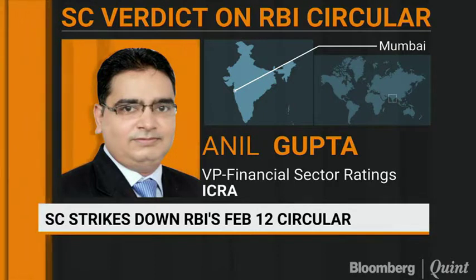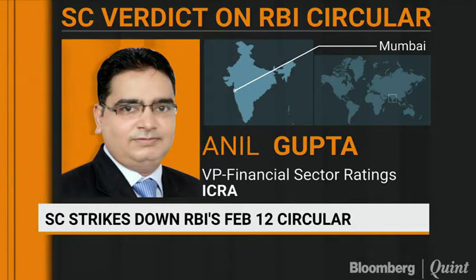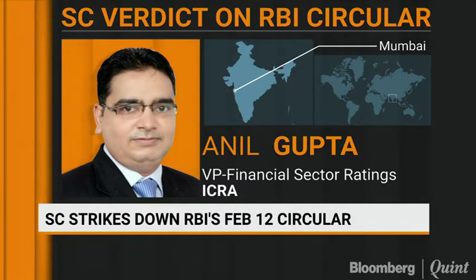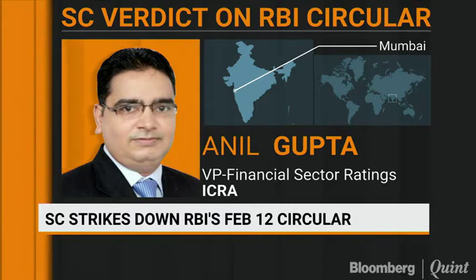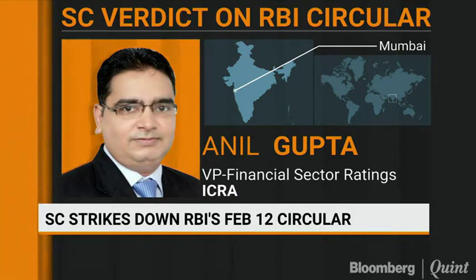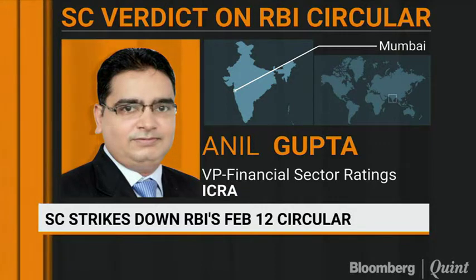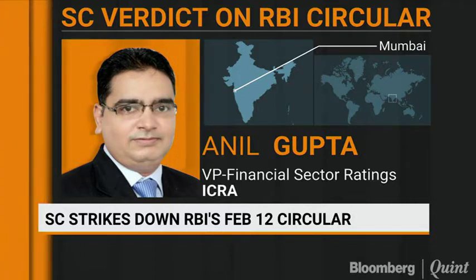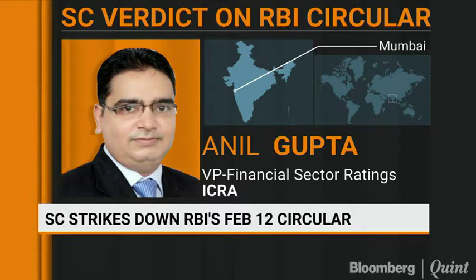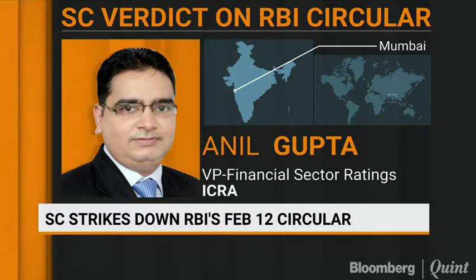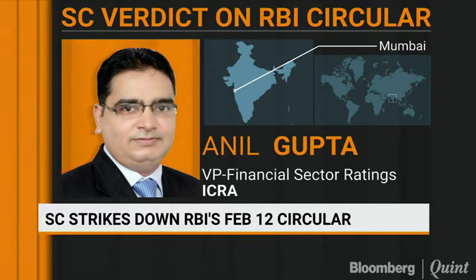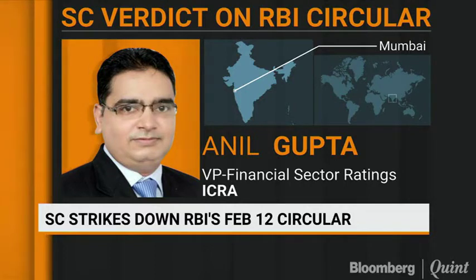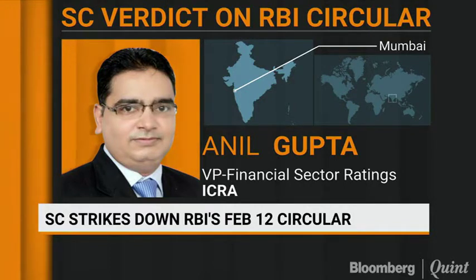There was an NCLT 1 list and an NCLT 2 list where the RBI identified borrowers that banks should be taking to NCLT and doing proceedings under IBC. With this February 12th circular, what RBI wanted was basically not to get involved in naming borrowers, and to do this process in an automated way — whereby if any borrower is overdue in repayments, RBI does not need to name those people.